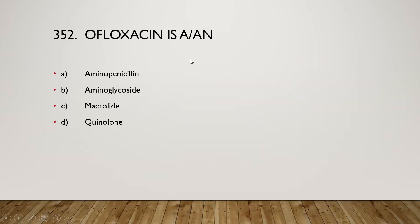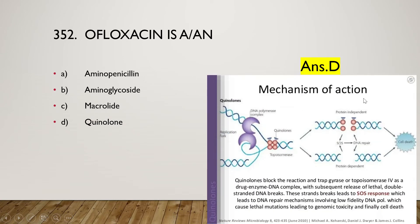The next question: ofloxacin is an amino penicillin, amino glycoside, macrolide, or quinolone? The right answer is option D, quinolone. The mechanism of action is that quinolones block the reaction and trap DNA gyrase or topoisomerase 4 as a drug-enzyme-DNA complex, which subsequently releases lethal double-stranded breaks.